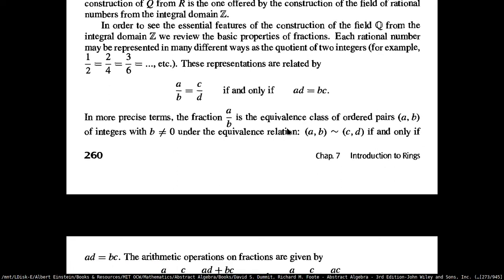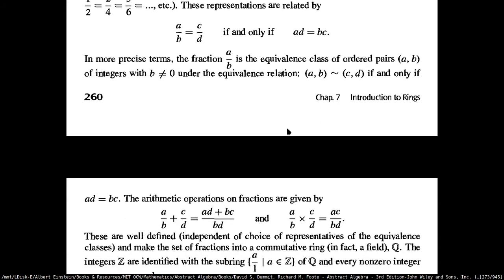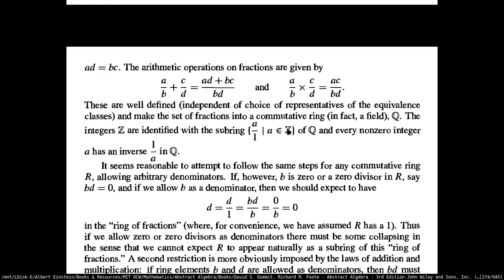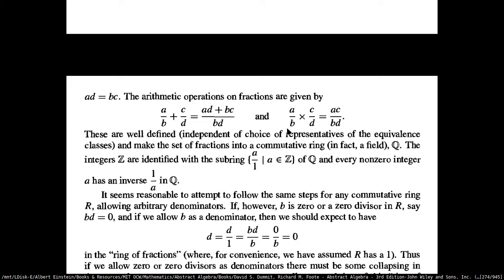Let's see this equivalence relation. A fraction A over B is the equivalence class of ordered pairs AB of integers — non-zero integers — related on the condition that AB is equivalent to CD if and only if AD is equal to BC. That is the basic condition for a fraction. On top of that you have the multiplication and addition of fractions: A over B plus C over D is equal to AD plus BC over BD. They are well-defined, independent of the choice of representatives for each equivalence class.